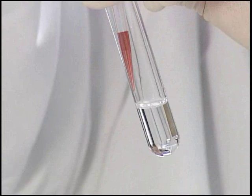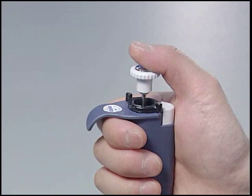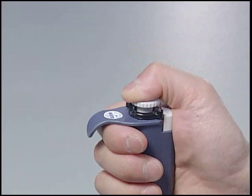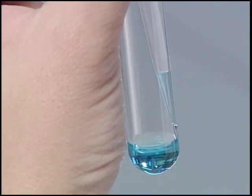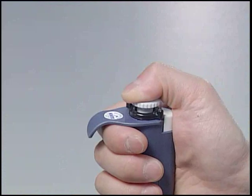To dispense the solution, depress the plunger to the first stop and wait a few seconds for the residual volume to reach the end of the tip. Then, completely depress the plunger to the second stop for the final blowout of the solution.